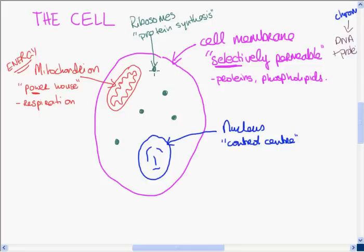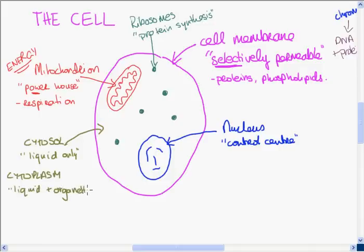The next part of the cell is the cytoplasm or the cytosol. The cytosol is the liquid part of the cell. It is the liquid only. Whereas the cytoplasm is the liquid plus the organelles. What are organelles? You could think of them as the little organs of the cell. The mitochondrion is an organelle, the ribosomes are an organelle, the chloroplasts are organelles.